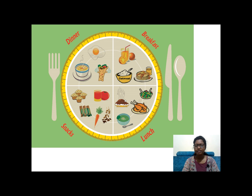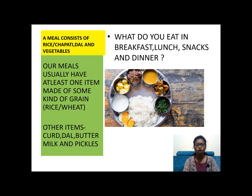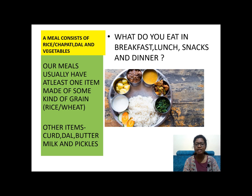When you eat food at breakfast, lunch, snacks, and dinner, what do you eat? Generally, when we talk about a meal, our Indian meal consists of rice, chapati, dal, and some vegetables. Our meals usually have at least one item made of some kind of grain — rice or wheat — and other items like curd, dal, butter, buttermilk, and pickles.